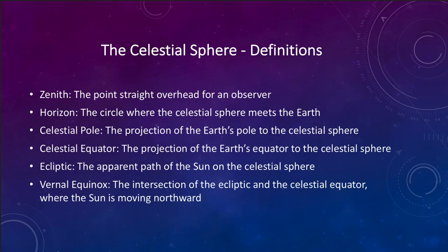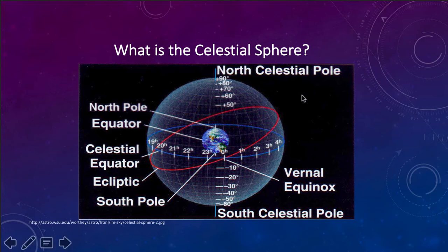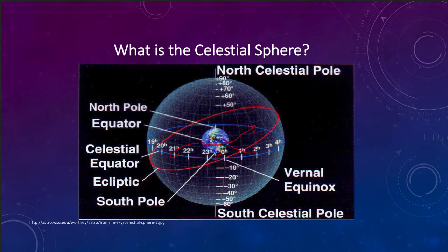The celestial equator is the projection of the Earth's equator onto the celestial sphere. You can imagine if the equator were a big stretched band and you could stretch it outward — there's an equator on Earth, and if you could stretch that out to the sky, it would fill the celestial equator, shown as a blue line here. So it is just the Earth's equator stretched out to the sky.